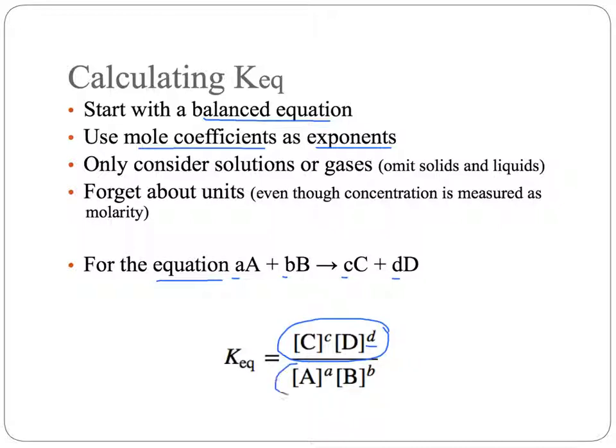The general equation then is to have the product of the products raised to the coefficient as an exponent, divided by the product of the reactants, with each of those also raised to the coefficient for each reactant as the exponent.